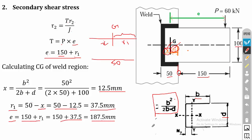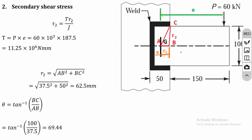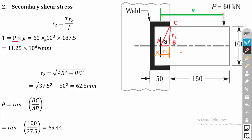Remember that in the previous problem the eccentricity was directly given, but here we calculated it via X-bar and R1. Now substituting into the torque equation: T = P × E = 16 × 10³ × 187.5 = 11.25 × 10⁶ N·mm. This follows the same approach as the previous problem.